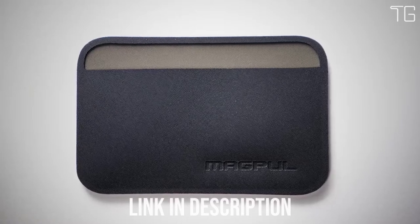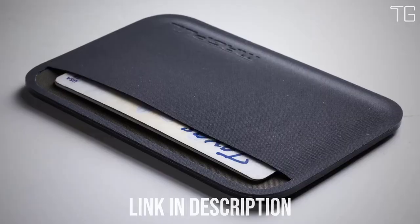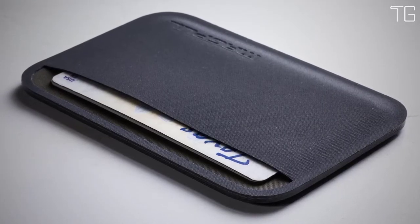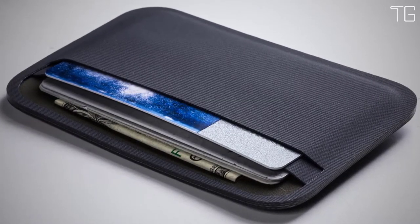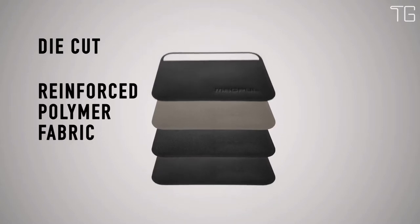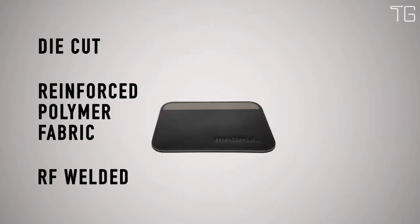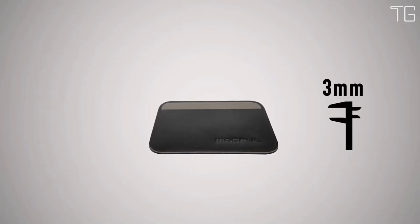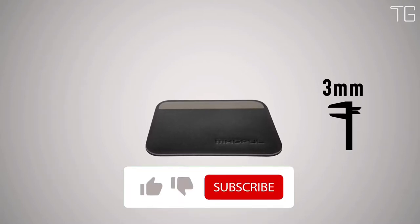That's why we created the Magpul DACA Essential Wallet. We set it up for ID and access cards on one side and your currency on the other, so you know what you need to pull at a glance. It's made from four layers of die-cut reinforced polymer fabric, which are RF welded together to create a super strong and impenetrable seal. It's only three millimeters thin when empty. That's less than two credit cards.